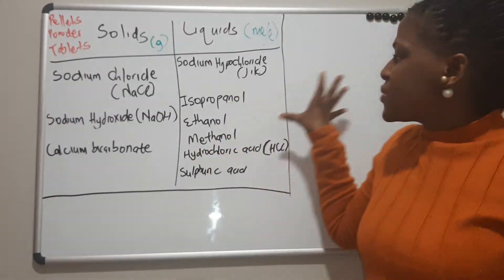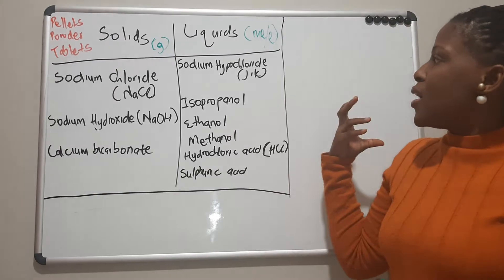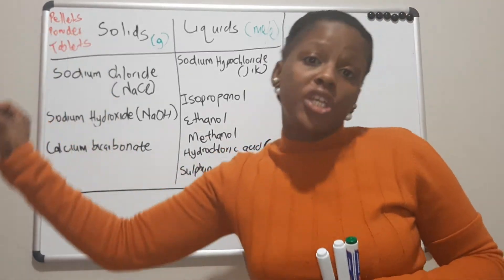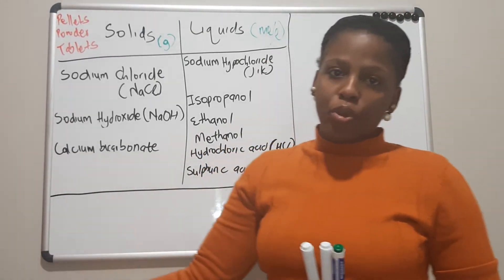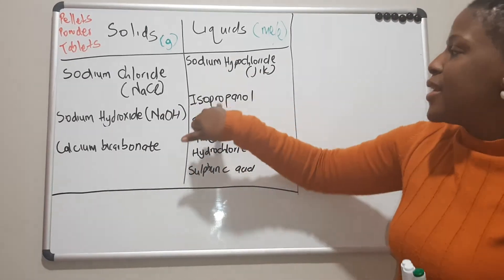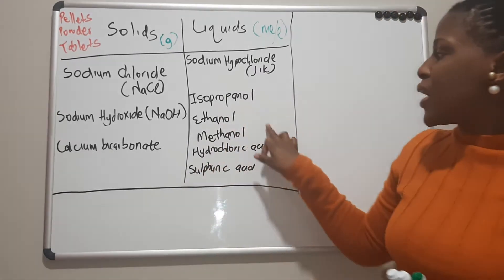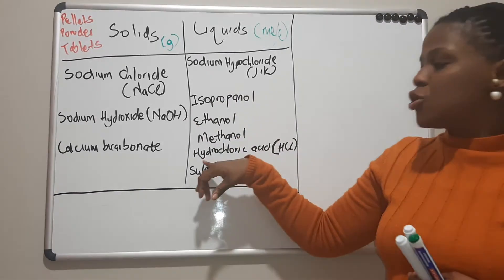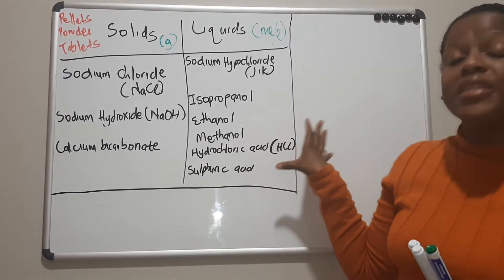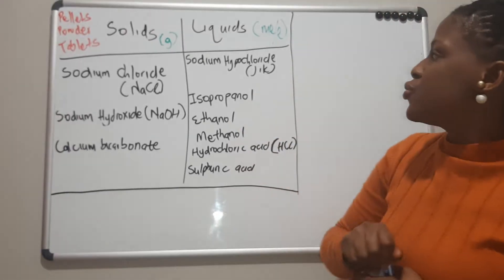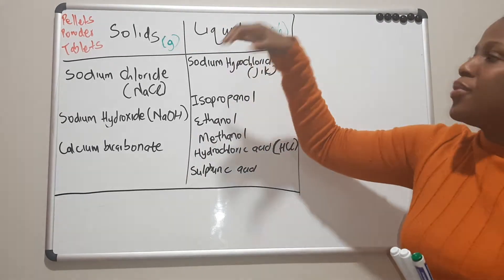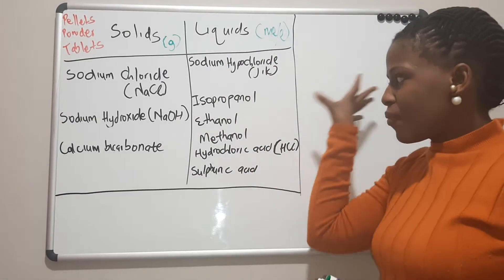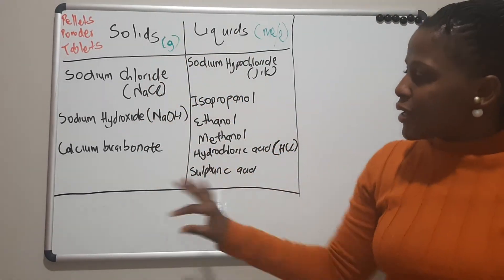Under liquids there are quite a few. Sodium hypochlorite is basically just your normal Jik that you use at home — they can write 'prepare a solution of Jik' or 'prepare a solution of sodium hypochlorite.' There's also isopropanol and all your alcohols — any chemical that ends with '-nol' is an alcohol, like ethanol and methanol, which are also liquids. There's also hydrochloric acid and sulfuric acid. When talking about liquids, the unit will be milliliters.